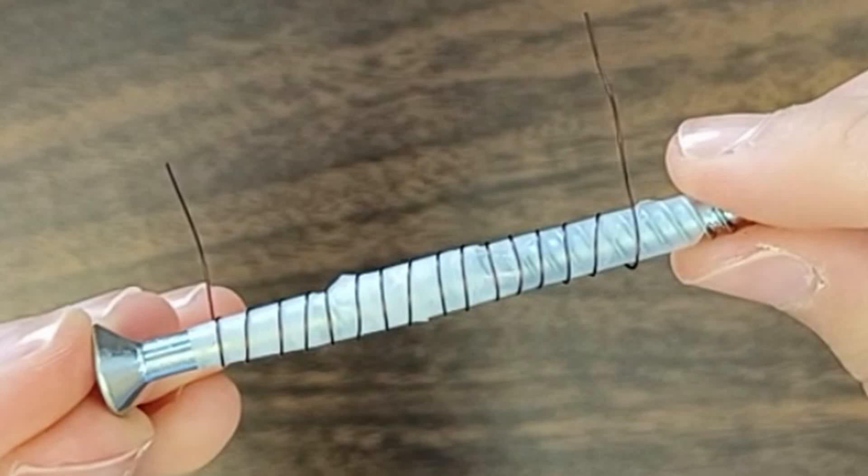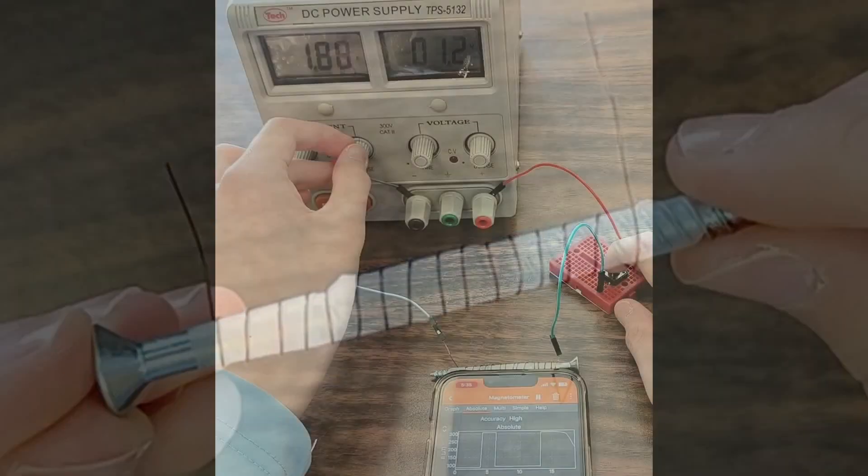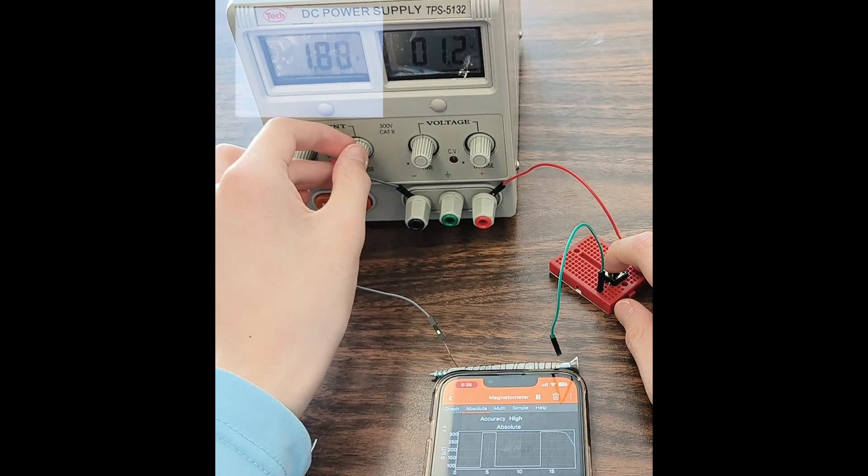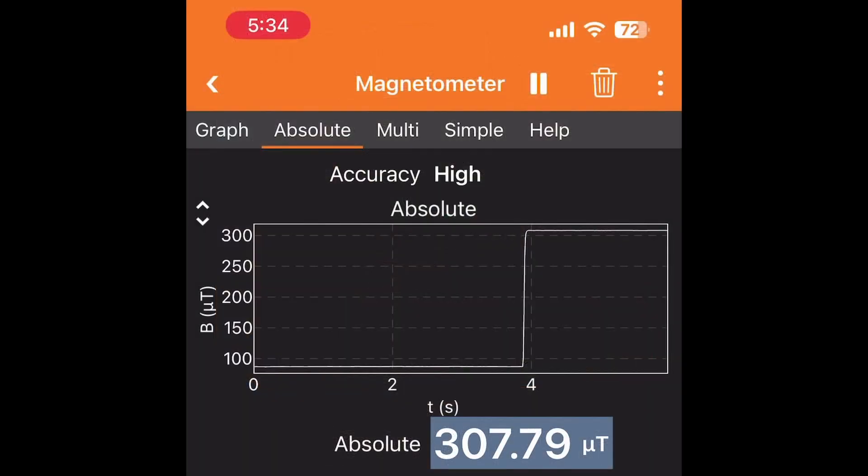Hello, today we will be demonstrating a simple electromagnet and the linear correlation between the current flowing through it and the strength of the field it produces.